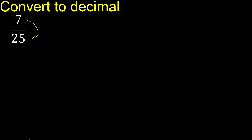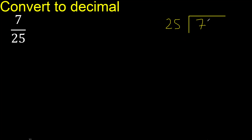7 divided by 25. 7 is less than 25, therefore complete — always complete with 0.